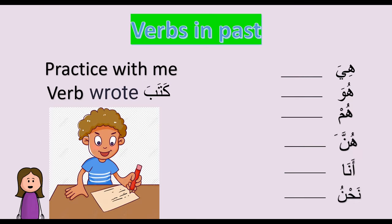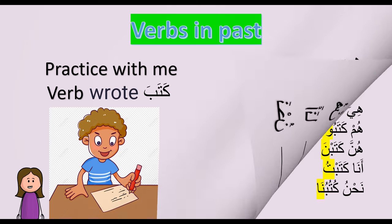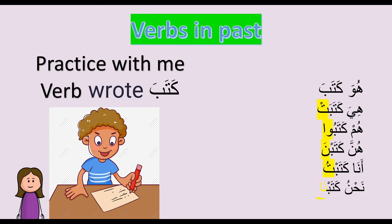To make sure you understood the lesson, let's practice with another verb. You will naturally find some difficulty in the beginning understanding the grammar because this is something new, but with practice and pronunciation you are going to improve inshallah. The verb is كَتَبَ, which means 'wrote' in English. How to say 'he wrote' in Arabic? هو كَتَبَ — we just use the basic verb for the pronoun هو.